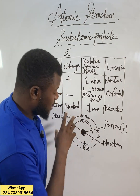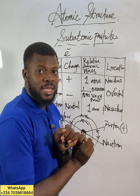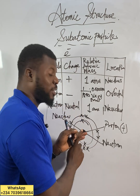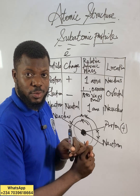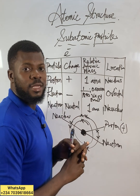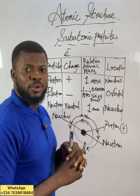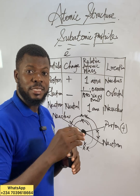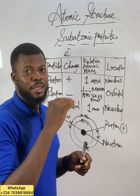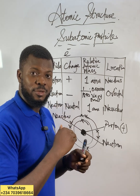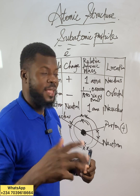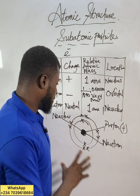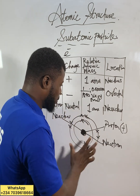I will introduce the Pauli exclusion principle. I will teach you about Hund's rule of maximum multiplicity. And the third one we will call the Aufbau principle. So we have the Pauli exclusion principle, Hund's rule, and the Aufbau principle. These three principles will guide you on how to arrange electrons.